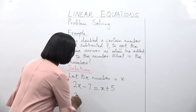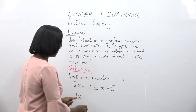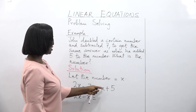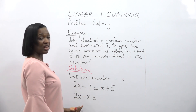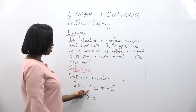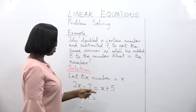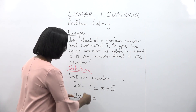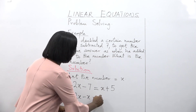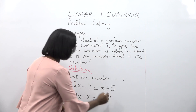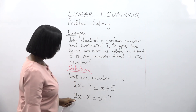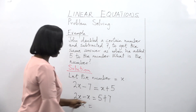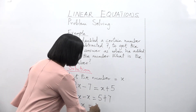Collect like terms: 2x minus x is equal to... x comes from the right hand side of the equation to the left, and minus 7 goes from the left to the right and becomes plus 7. So 2x minus x is x, and 5 plus 7 is equal to 12.